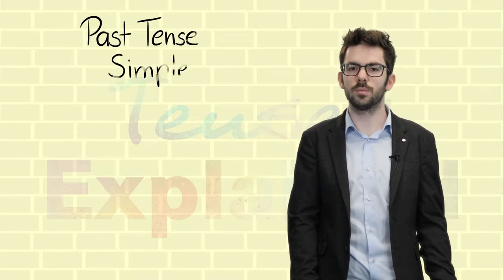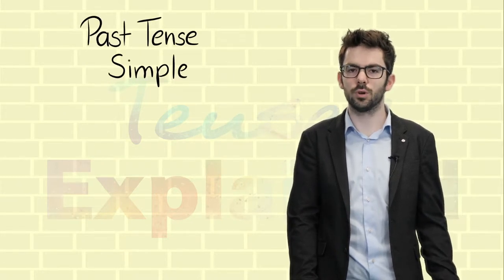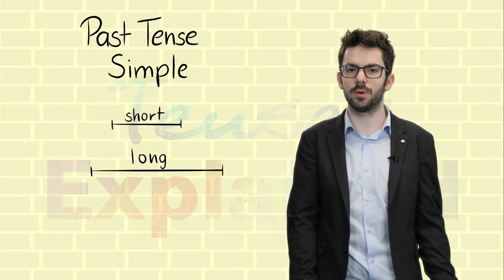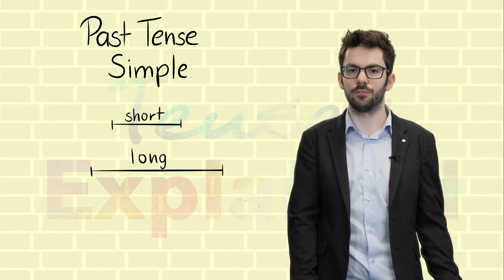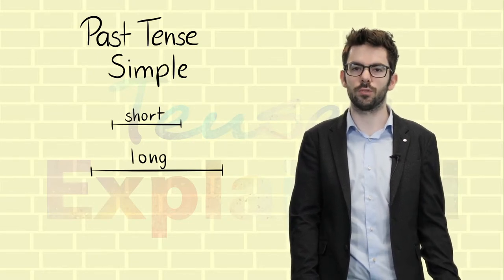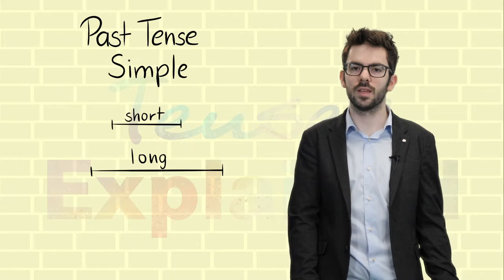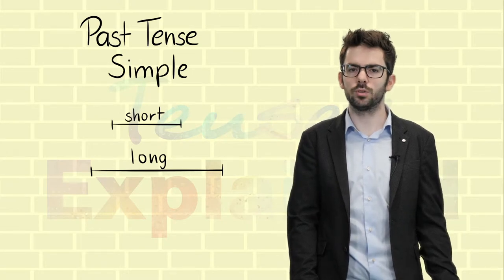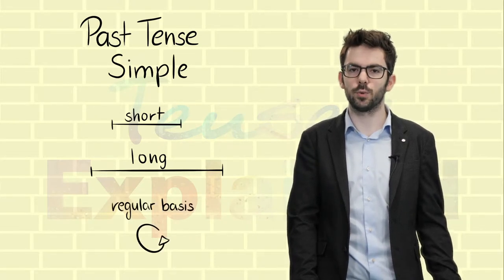Let's have a look at the simple form first. We use the past tense simple to talk about short or long actions in the past that are finished and are therefore not connected to the present or the future. It can also be used for events that happened on a regular basis in the past.